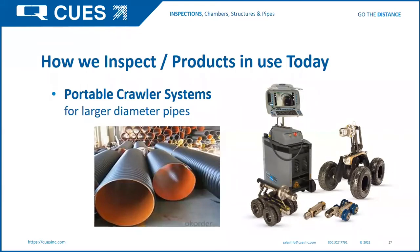For larger diameter pipe, portable crawler systems are used for pipe from 8 inches to 60 inches using a variety of crawler bodies, wheel sets, camera heads, and elevators, available in cable lengths generally up to 1,000 feet. This design enables the end user to deploy the system from smaller vehicles — a pickup truck or ATV. They're relatively lightweight, easy to use, and extremely portable, so you can actually walk them down into areas that are normally inaccessible.